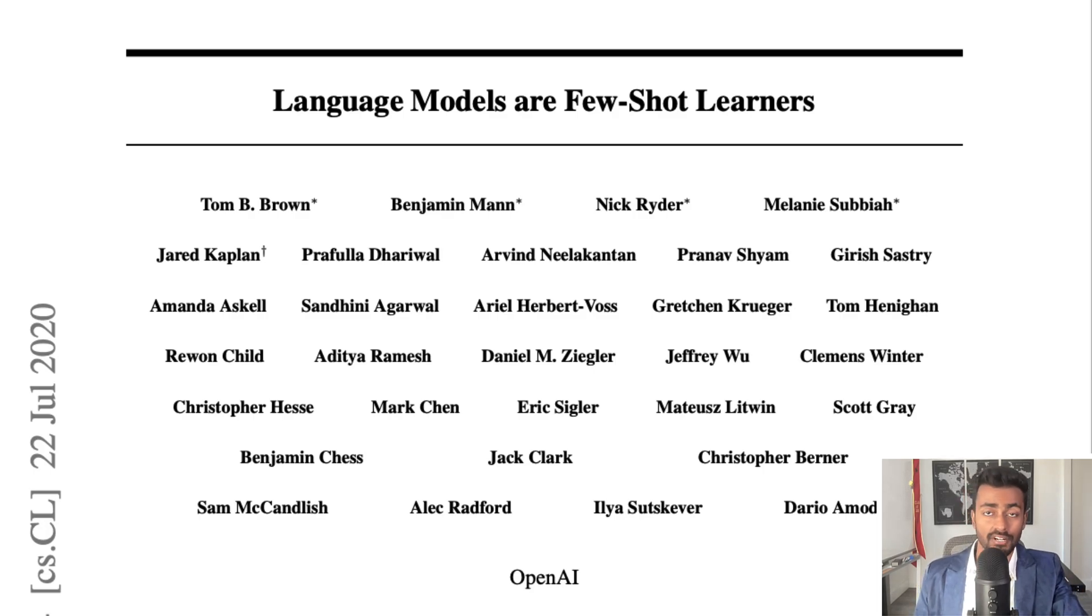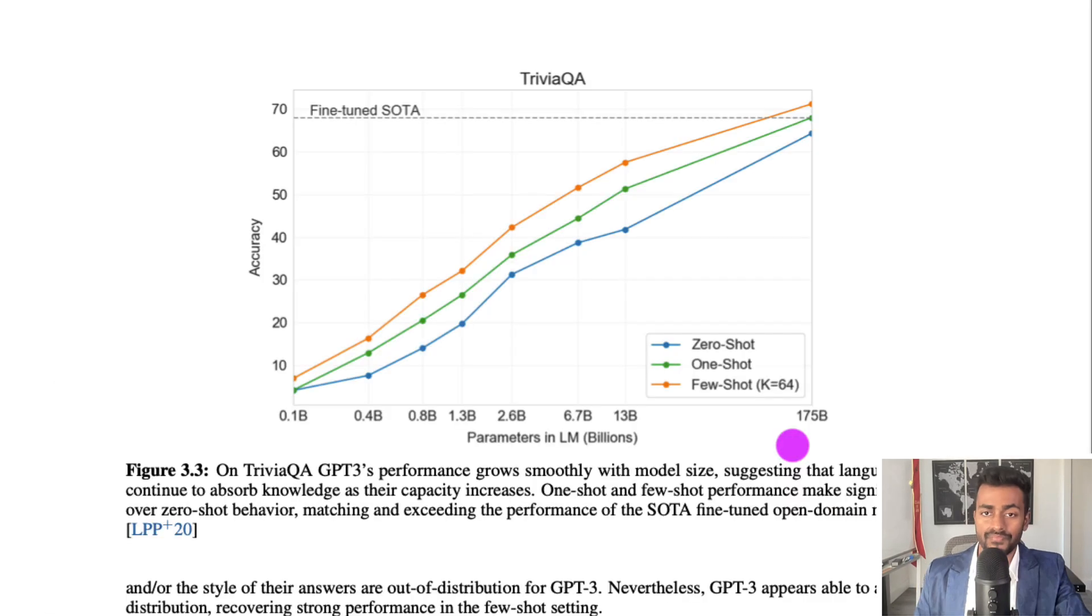Few shot learning is actually quite useful. In fact, the original version of GPT-3 uses few shot learning. And the performance of few shot learning is pretty good. For the largest 175 billion parameter model, we see that few shot learning even outperforms the fine-tuned state of the art for certain tasks. So there is some promise here.